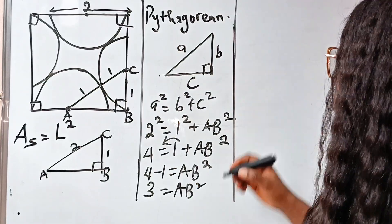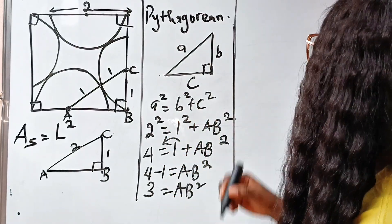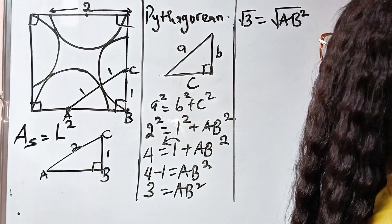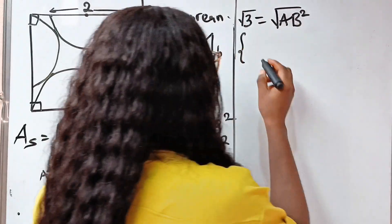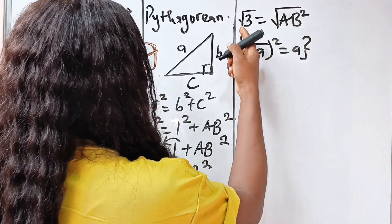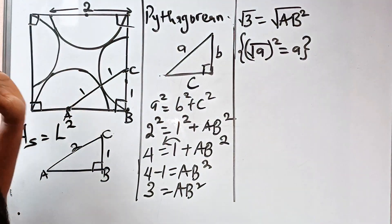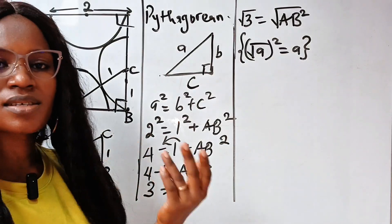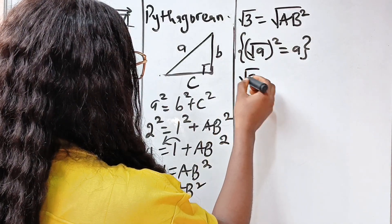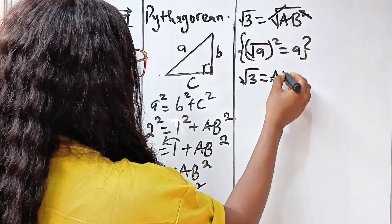To get AB, we take the square root of both sides. Taking the square root gives us AB equals the square root of 3. Remember, the square root of A squared equals A. The square root of 3 gives plus or minus root 3, but because AB is a length it cannot be negative, so AB equals positive root 3.